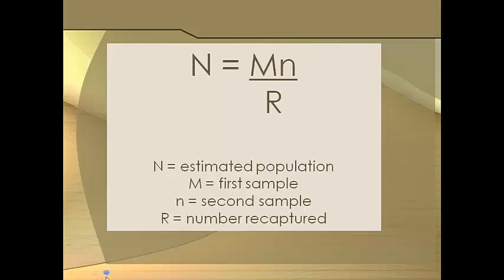As we had with the sample census to determine population density, we have an equation with this one as well. So this equation for determining population density of our moving population has four variables.